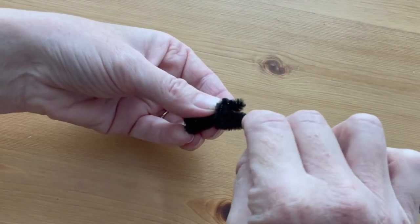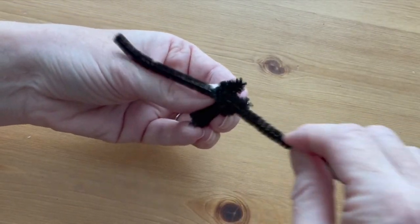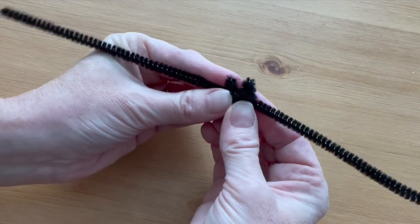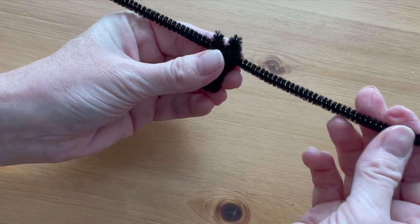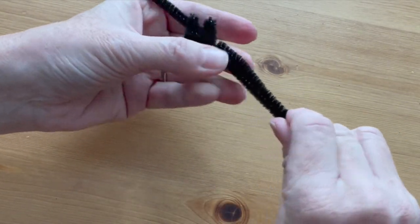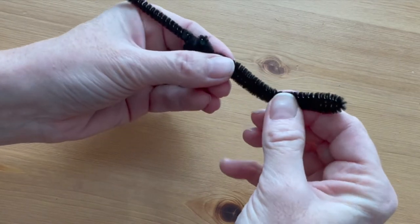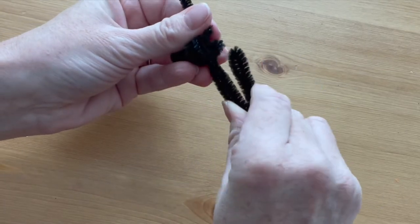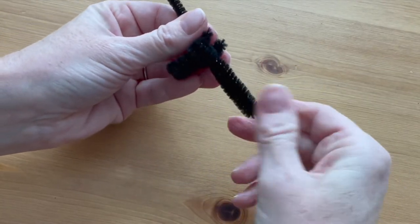Slide another pipe cleaner through a coil at the back of the head and center it. This will be the base for the wings. Now fold one side in half so that it just meets the body of the bat, and then take that part and fold it in half again. Do the same thing for the other side.